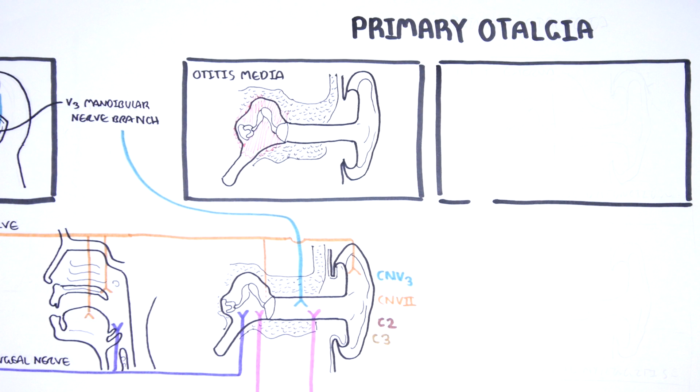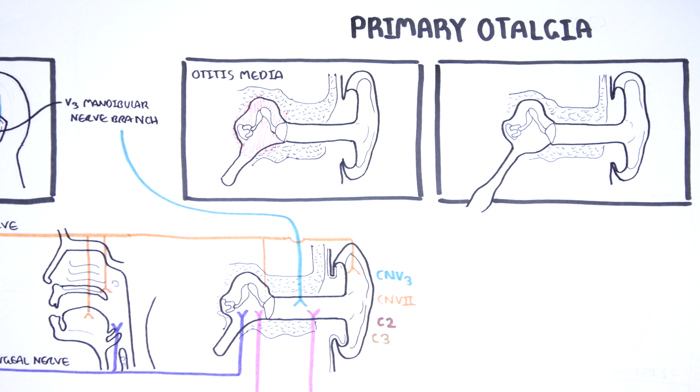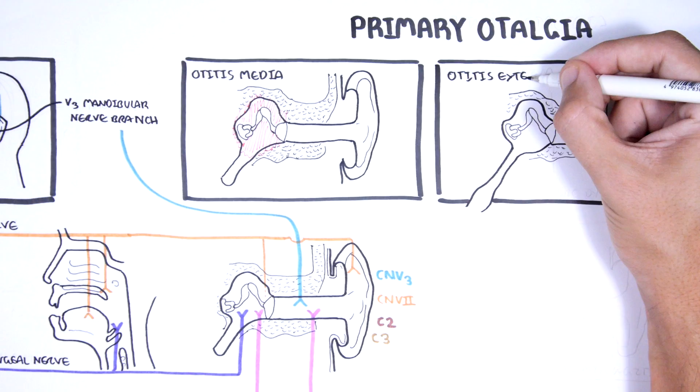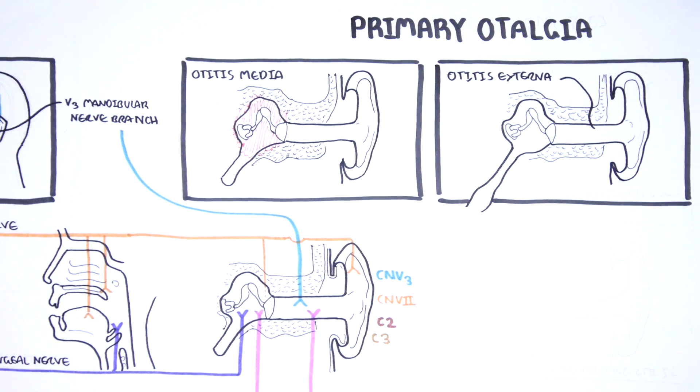Otitis externa, also known as swimmer's ear, is infection of the external ear, typically by bacteria Pseudomonas aeruginosa and Staphylococcus aureus. Otitis externa is characterized by pain and tenderness localized to the external ear canal.